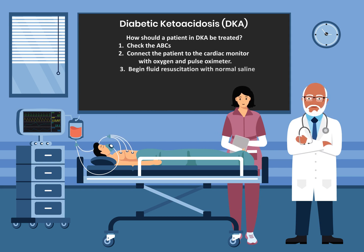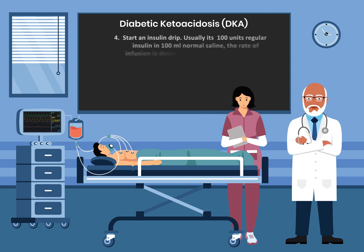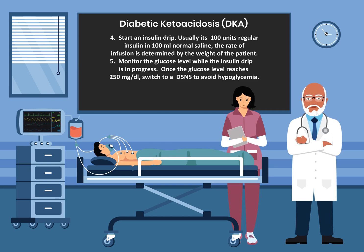How should a patient in DKA be treated? Number one, check the ABCs. Number two, connect the patient to the cardiac monitor with oxygen and pulse oximeter. Number three, begin fluid resuscitation with normal saline. Number four, start an insulin drip — usually it's 100 units of regular insulin in 100 mL of normal saline. The rate of infusion is determined by the weight of the patient.